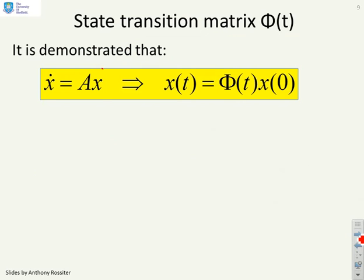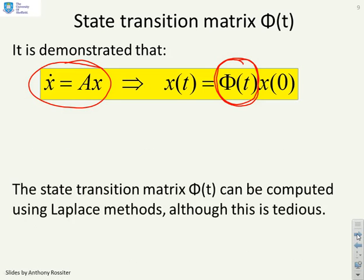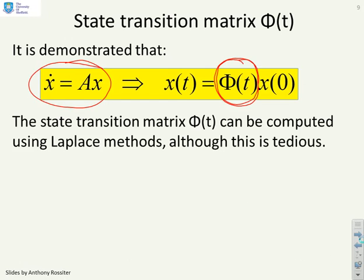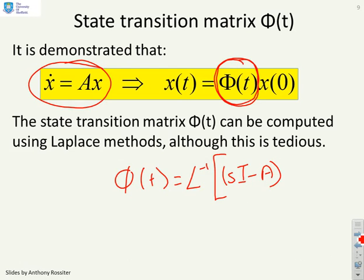So we've demonstrated that given you have a formula x dot equals ax, then there exists a state transition matrix phi of t such that you can write x of t equals phi of t times x of 0. And we've shown that the state transition matrix phi of t can be written as Laplace inverse of (sI minus A) inverse.